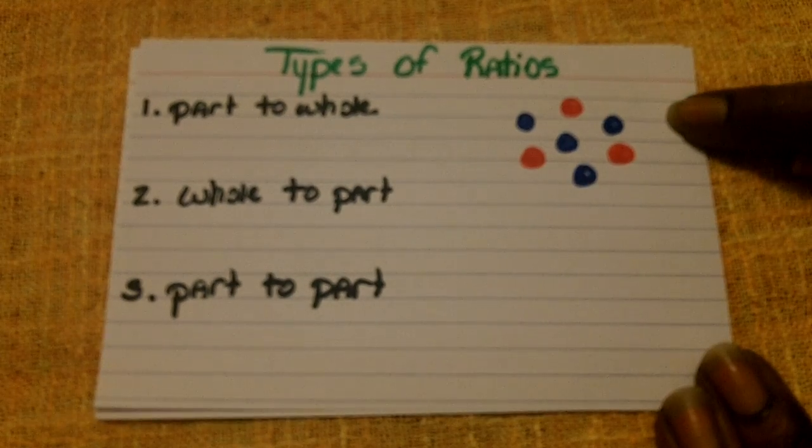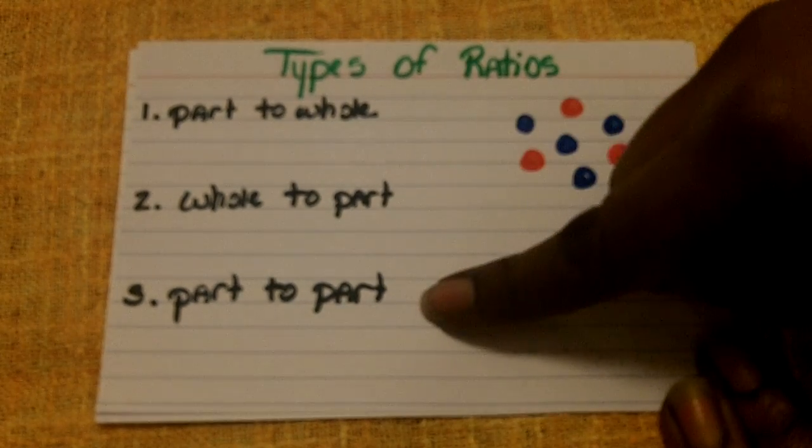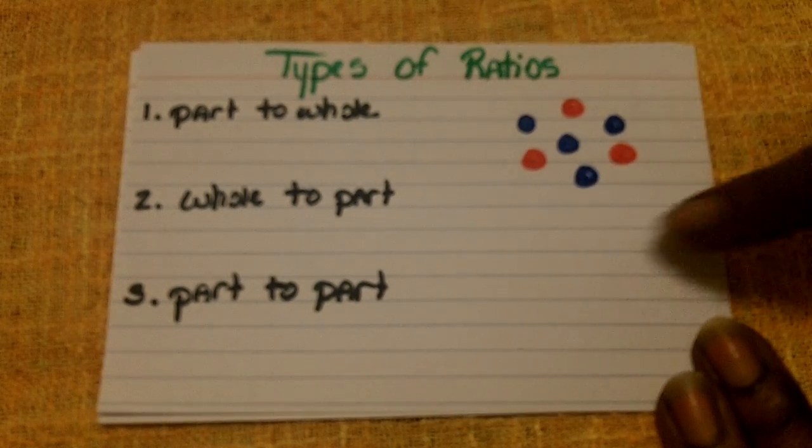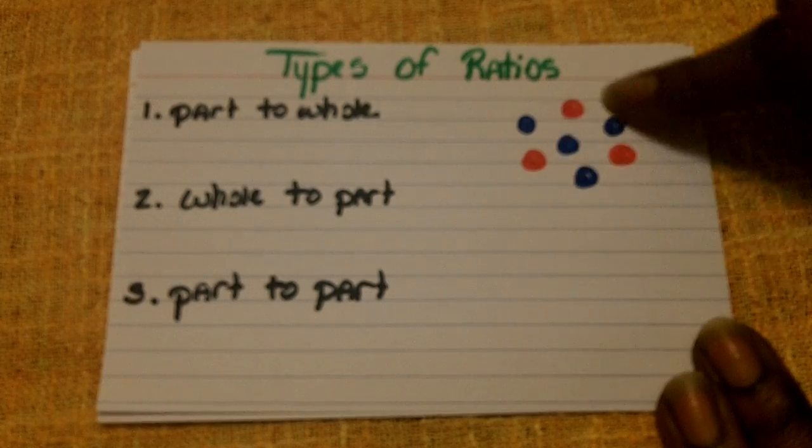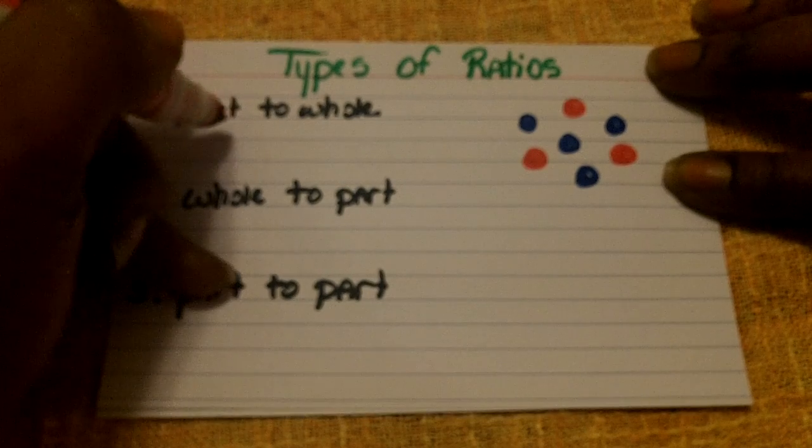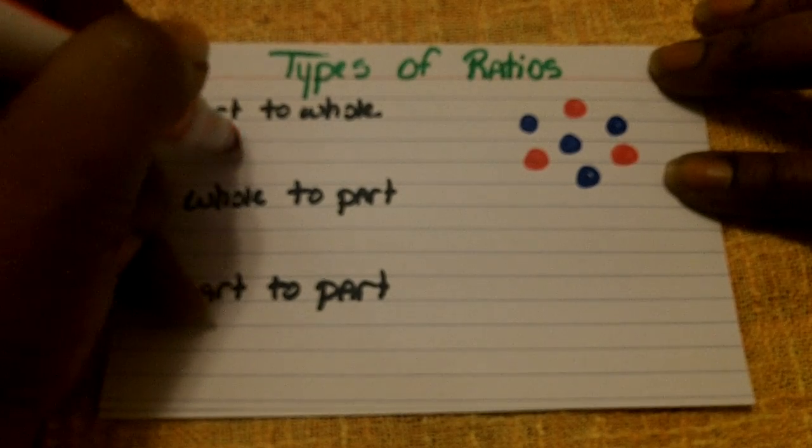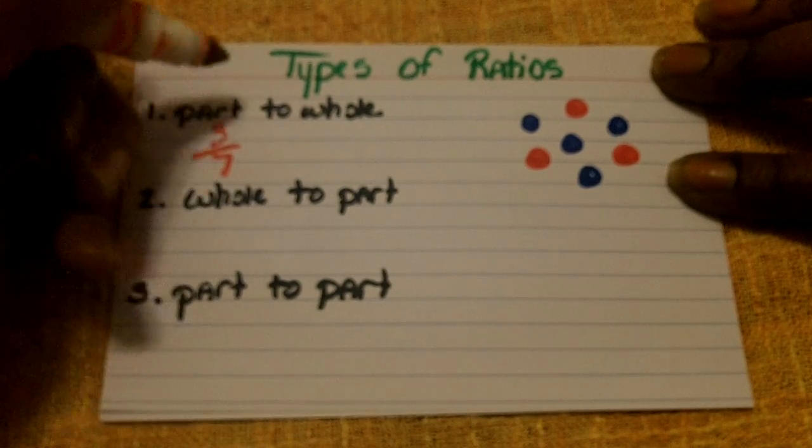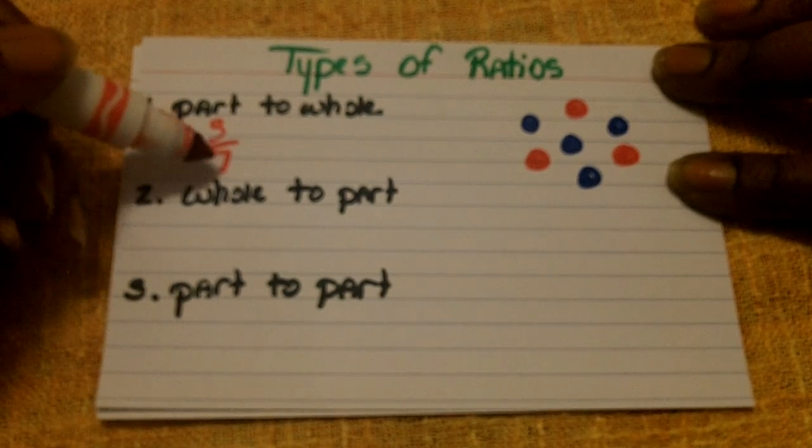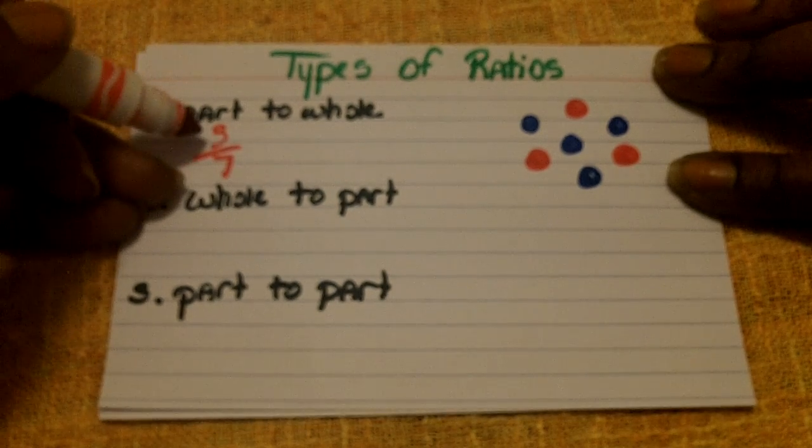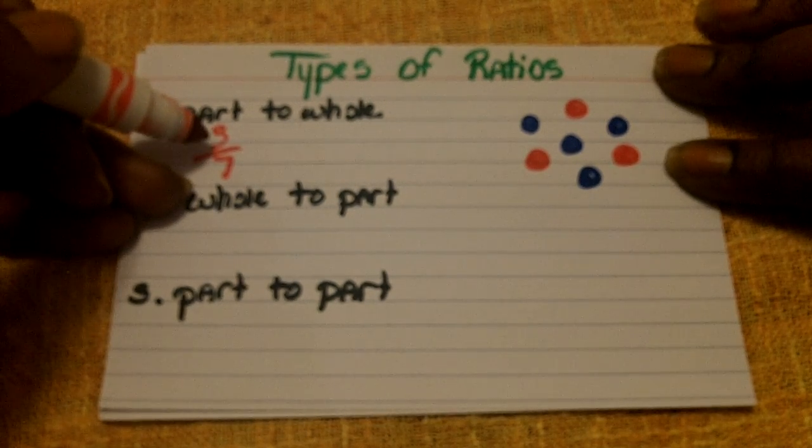We're going to use this example to demonstrate all three types. First, a part to whole. That is when you compare the part of the sample to the entire sample. So I'm going to compare the red circles, which is three, to the entire amount of circles, which is seven. Since there are a total of seven circles, seven would be the denominator, and the part that we're looking at is the red for three.